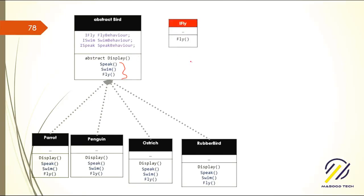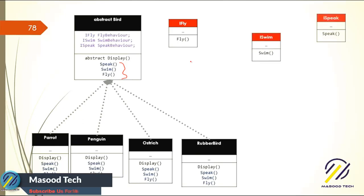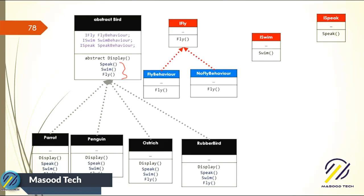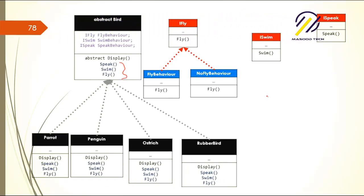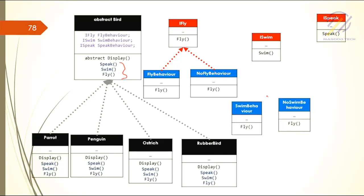This time, rather than just having interfaces, we create concrete classes that implement those interfaces. We have a FlyBehavior class that implements IFly with a fly method, and a NoFlyBehavior class for birds that cannot fly. If you have ten different types of fly behaviors, just write ten different classes. Similarly, we have SwimmingBehavior, NoSwimmingBehavior, SpeakBehavior, and SilentBehavior.